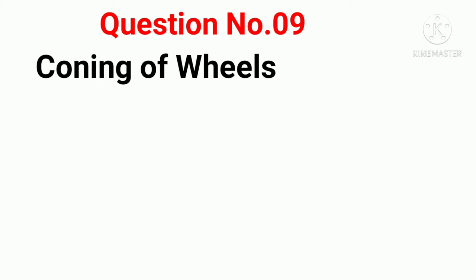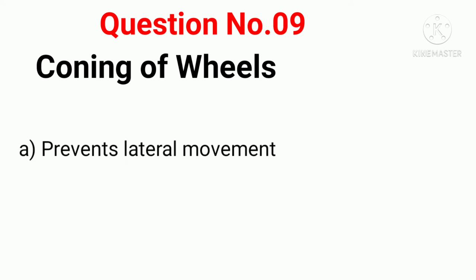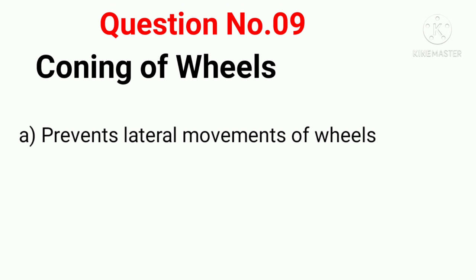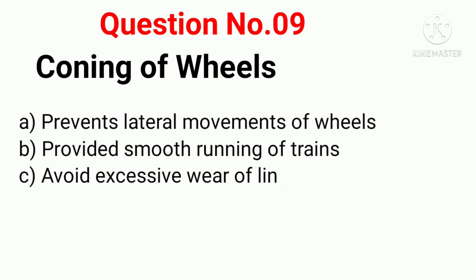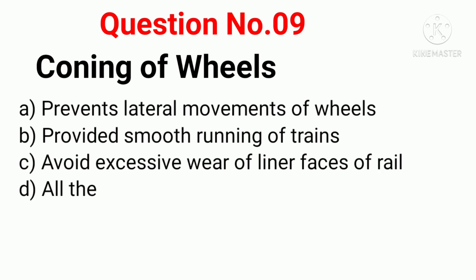Q9. Coning of wheels: Option A: Prevents lateral movements of wheels. Option B: Provides smooth running of train. Option C: Avoids excessive wear of liner faces of rail. Option D: All the above.